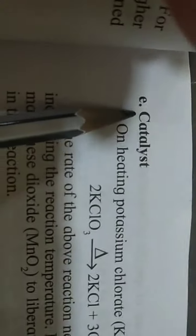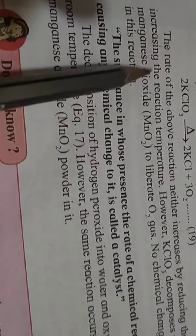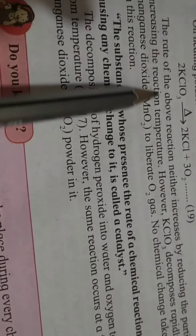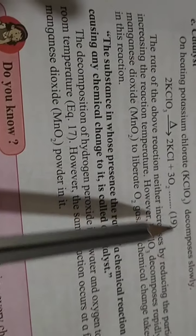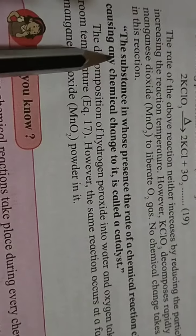After that, let us see the last factor, that is catalyst. On heating, potassium chlorate decomposes slowly. The rate of the above reaction neither increases by reducing the particle size nor by increasing the reaction temperature. Particle size doesn't affect it, temperature doesn't affect it. But then what do we need?